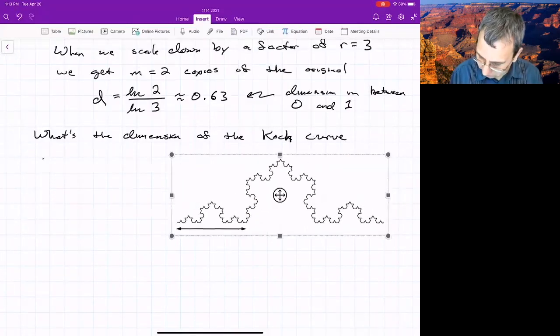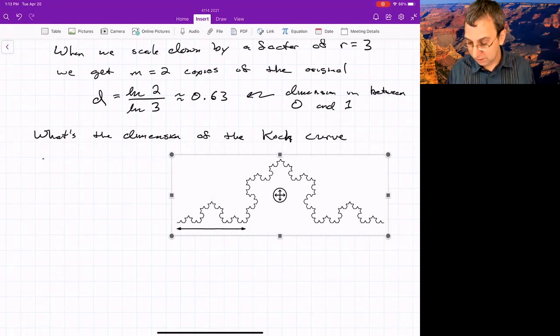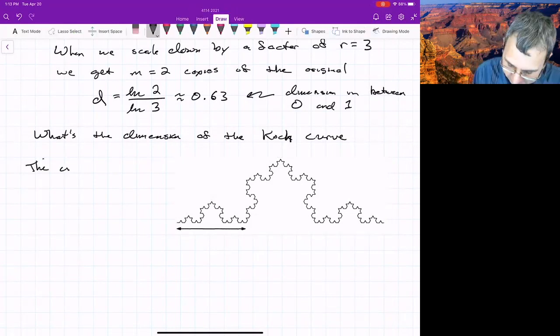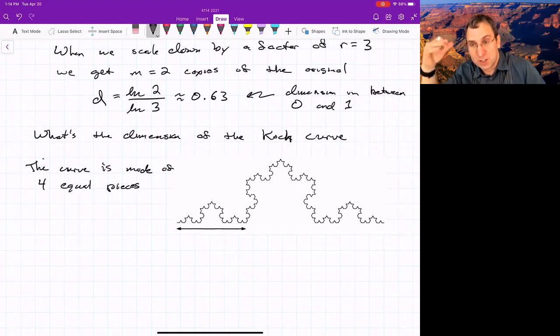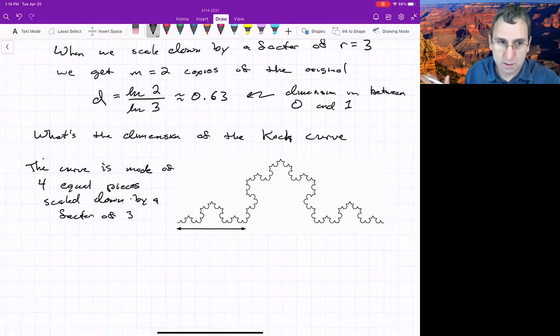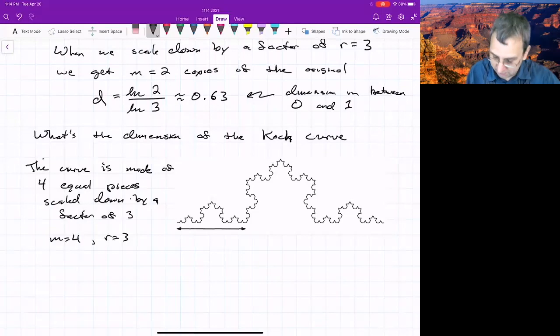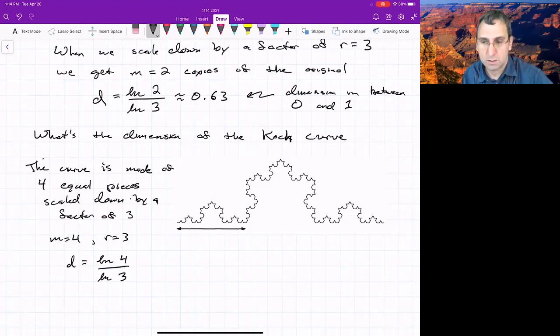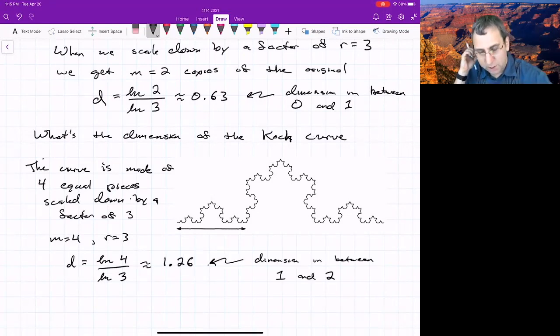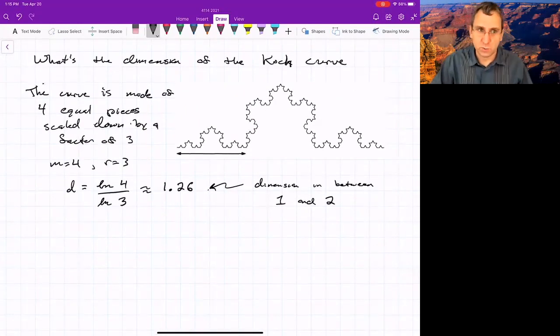What about the Koch curve? If you noticed from the construction, we scale down by a factor of three, and we get four copies. Hopefully you can see that. So the curve is made of four equal pieces, each of which is similar to the original curve, but scaled down by a factor of three. And again, it's there in the construction of it. So this gives us M equals four, R equals three. The dimension here should be LN4 divided by LN3, which ends up being 1.26, roughly. So again, somewhere in between one and two, like we expected. Not quite a curve, not quite an area.